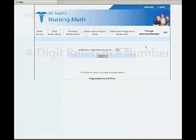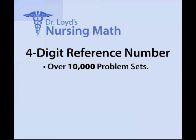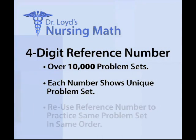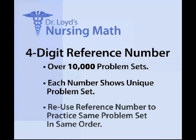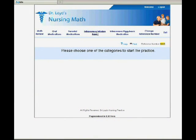The 4-digit number is important because it gives you access to over 10,000 sets of problems. If you change the 4-digit number, you will get a different set of problems to practice. If you wish to work on the same problems, enter the same reference number and you will generate exactly the same set of problems, in the same order.